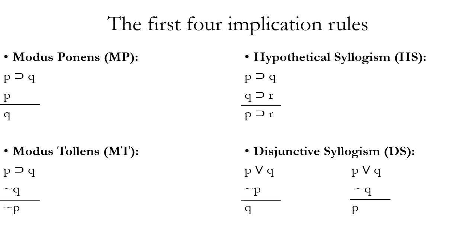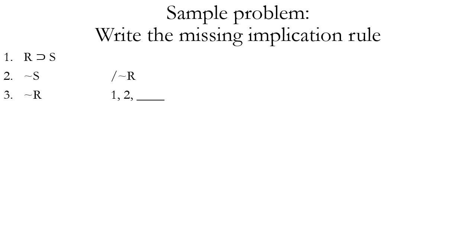Here's a summary of the first four implication rules. Modus ponens: from a conditional and its antecedent, prove the consequent. Modus tollens: from a conditional and the negation of the consequent, prove the negation of the antecedent. Hypothetical syllogism: from two conditionals with a matching consequent and antecedent, derive a new third conditional. Disjunctive syllogism: from a disjunction and the negation of one disjunct, prove the other disjunct is true.